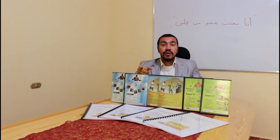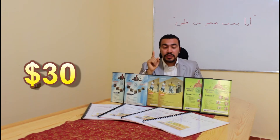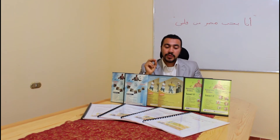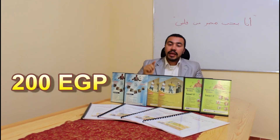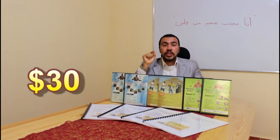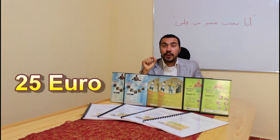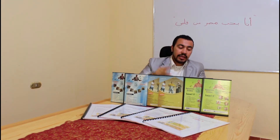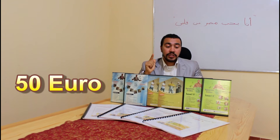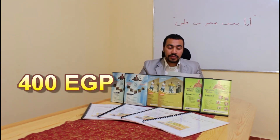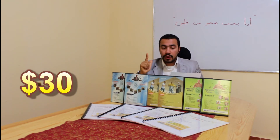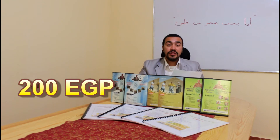For the price of my Arabic DVD courses: the DVD course for level 1 and 2 costs 30 dollars, or 25 euros, or 200 Egyptian pounds. The DVD course for level 3 and 4 costs 30 dollars, or 25 euros, or 200 Egyptian pounds. The DVD course for level 5 and 6 costs 60 dollars, or 50 euros, or 400 Egyptian pounds. The 4 books cost 30 dollars, or 25 euros, or 200 Egyptian pounds.